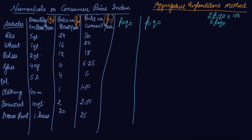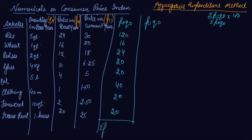Let's find P0Q0 first. P0 into Q0 gives us: 5 into 24 is 120, then 16, 24, 20, 20, 40, 20, and 20. Adding these gives summation P0Q0 as 280.